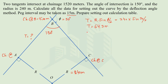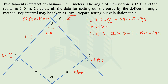Once we know the tangent length, the chainage at point A can be calculated by subtracting the tangent length from the chainage of the point of intersection. So 1520 minus 64.3 meters gives us the chainage at point A, which is 1455.7 meters.